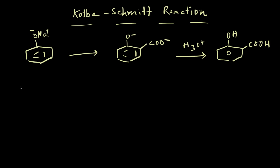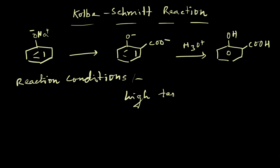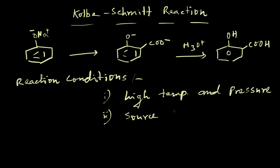The reaction conditions for the Kolbe-Schmidt Reaction require high temperature and pressure, and the source for the carboxylating reagent is gaseous carbon dioxide.